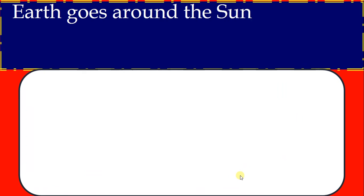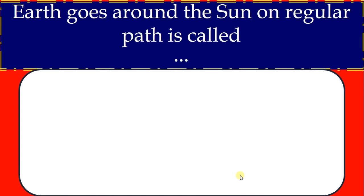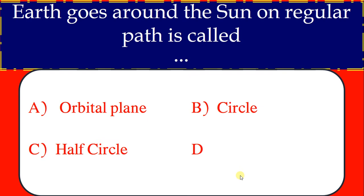Earth goes around the sun on regular path is called. Orbital plane, circle, half circle, none. Correct answer, orbital plane.